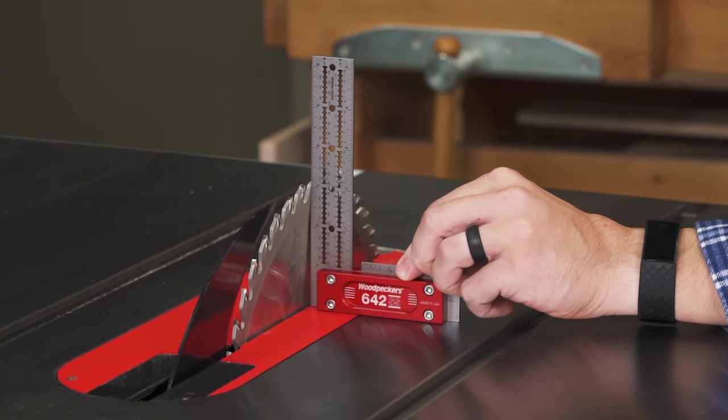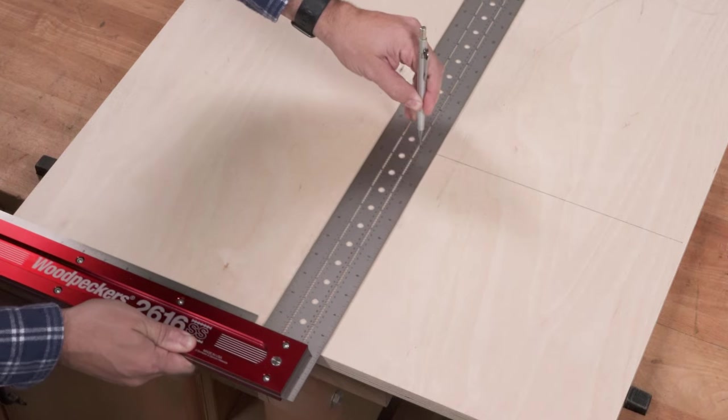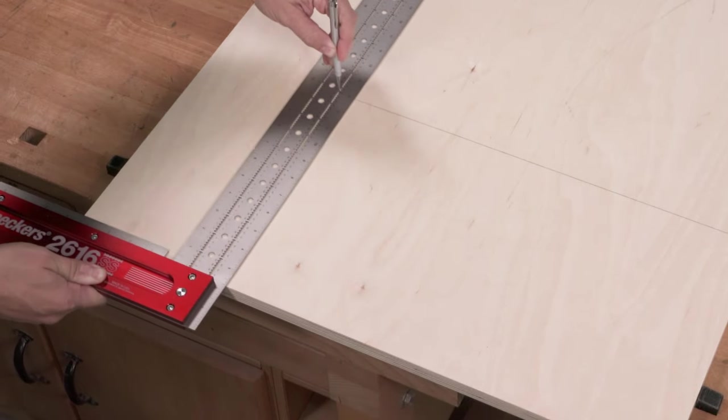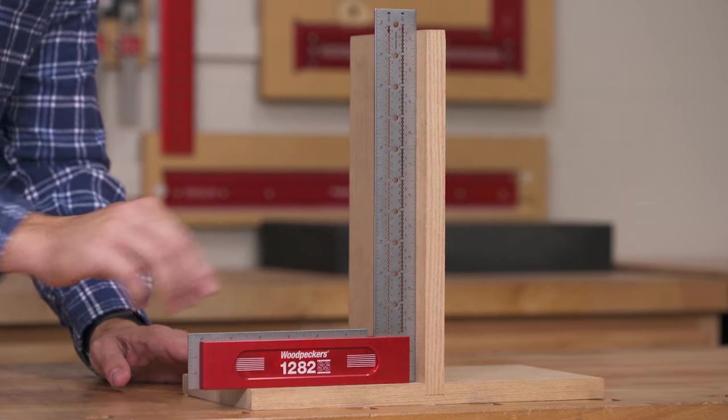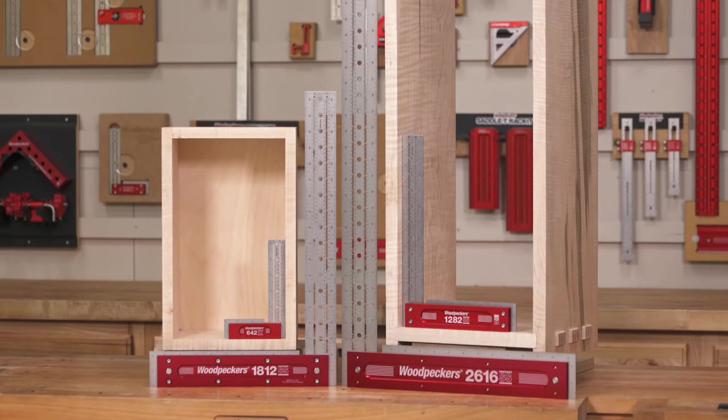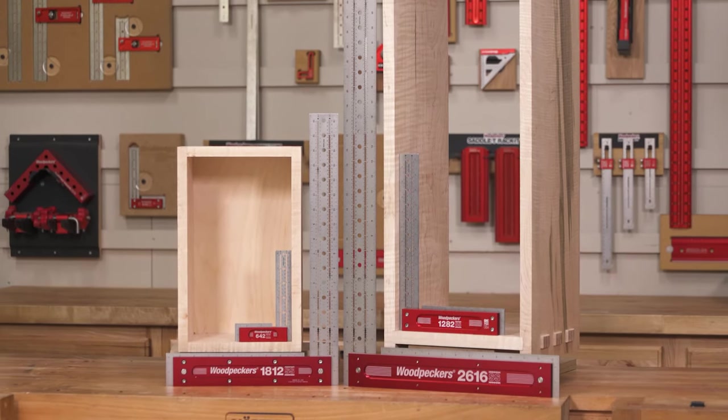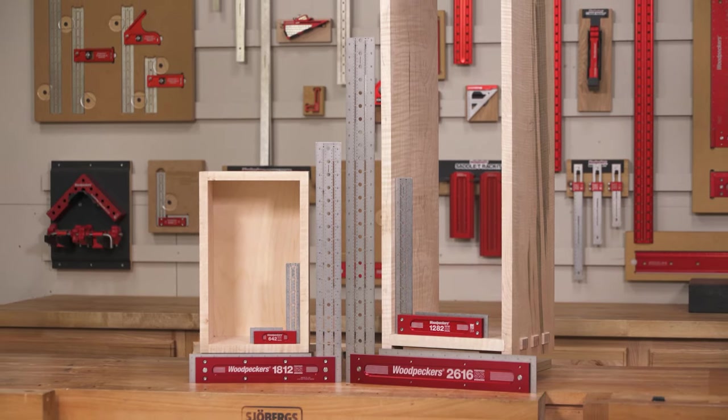Success in the workshop relies on the care you put into machinery setup, the accuracy of your layout work, and consistently checking your work during assembly. Woodpecker stainless steel precision woodworking squares handle all three jobs, ensuring your project starts square and ends square.